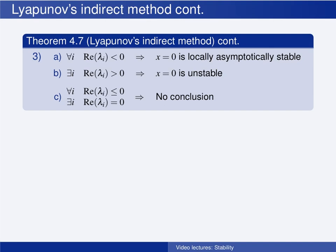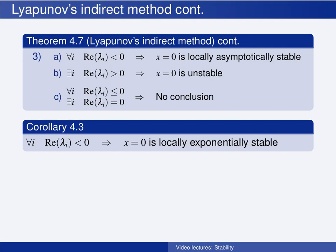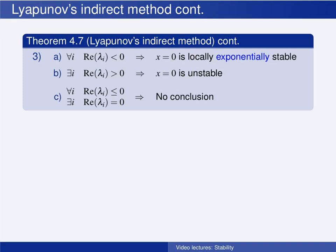If all eigenvalues have non-positive real parts and there exists an eigenvalue with a zero real part, then this method gives no conclusion. The equilibrium point of the linearized system is then a center in the two-dimensional case, but the equilibrium point of the original nonlinear system can be unstable, stable, asymptotically stable, or exponentially stable — we simply cannot determine this from this method. Actually, Corollary 4.3 allows a stronger conclusion for the first case: if all n eigenvalues have negative real parts, then the origin is locally exponentially stable.